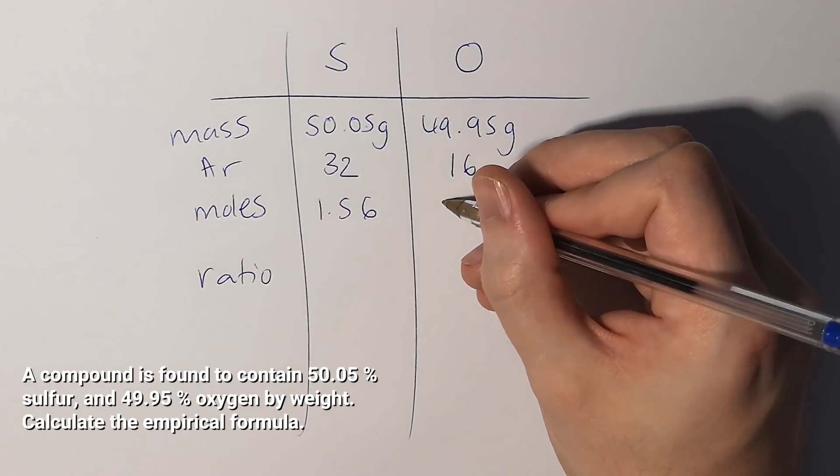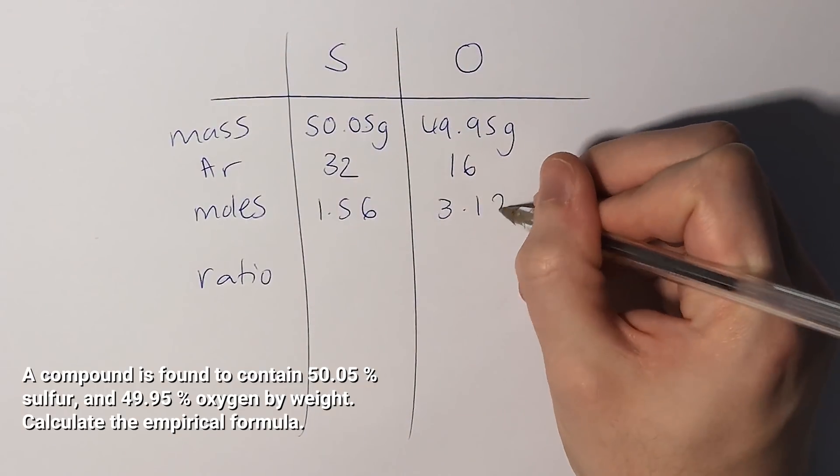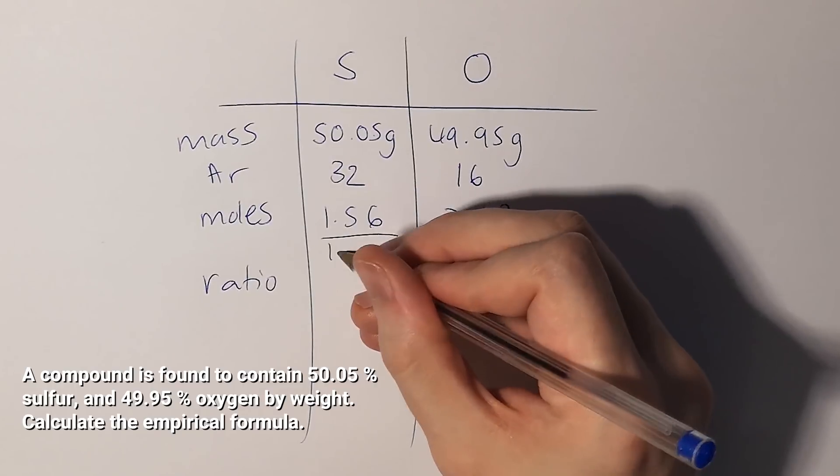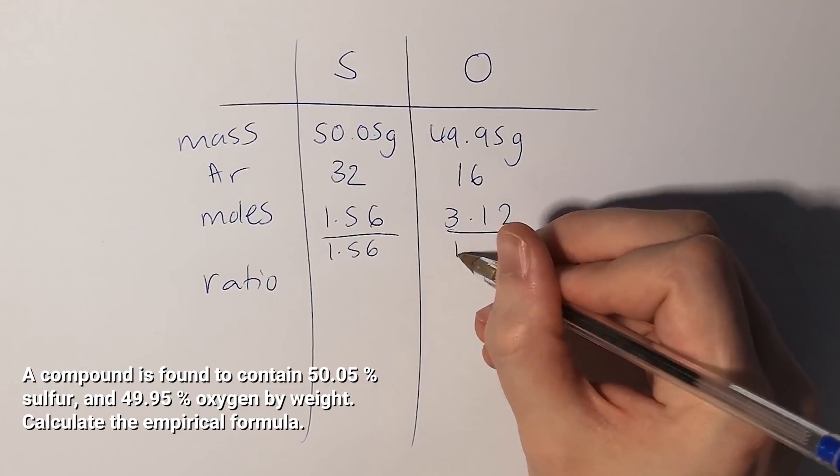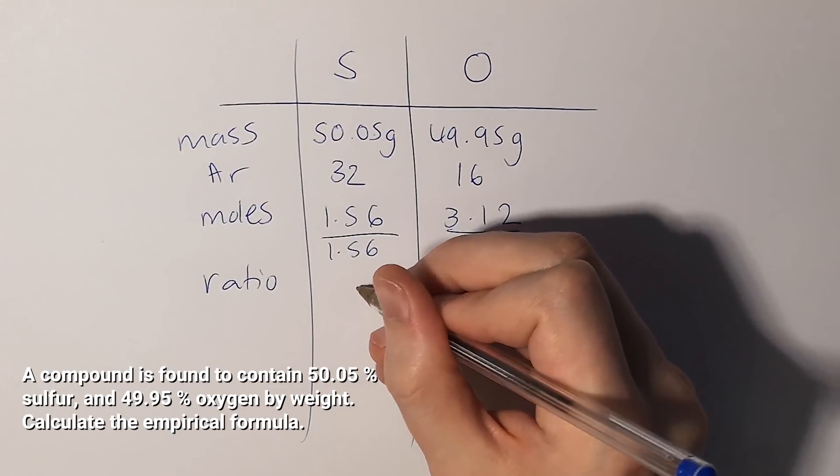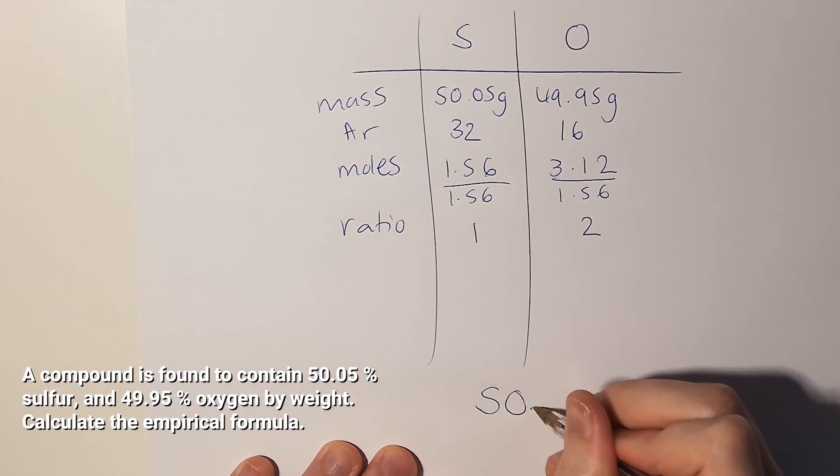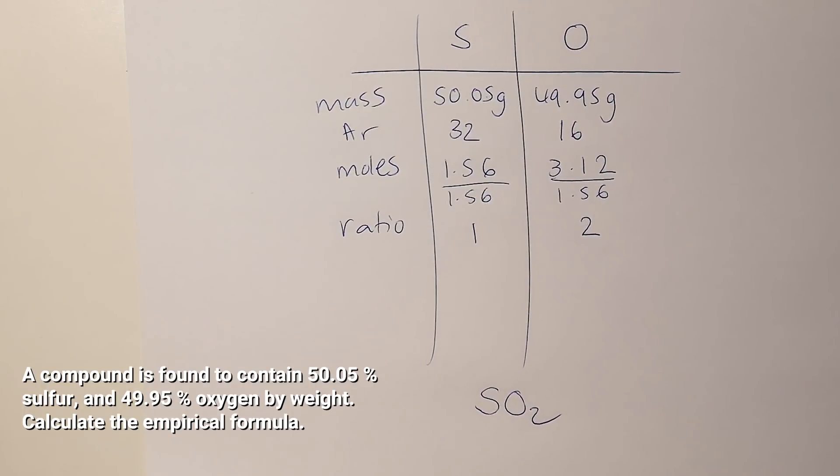Now if I work out my ratio, which I just divide both of them by the smallest number 1.56, it gives me a ratio of 1 to 2. That means for every one sulfur atom there are two oxygen atoms.